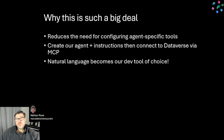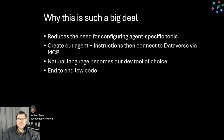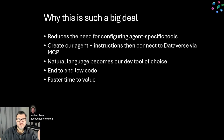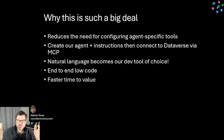Natural language becomes our development tool of choice. We simply write agent instructions, and hooked up to MCP, it handles the rest. This is an end-to-end low-code solution, and we get faster time to value — because all we have to do is write clear instructions for that agent, without spending a lot of time configuring tools, so we can realize value much, much faster.